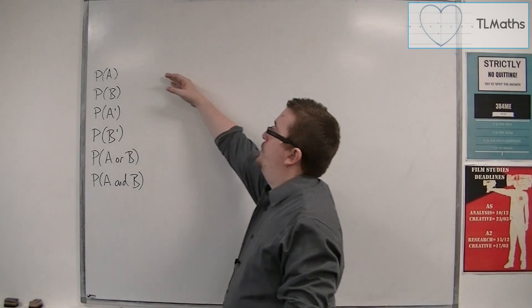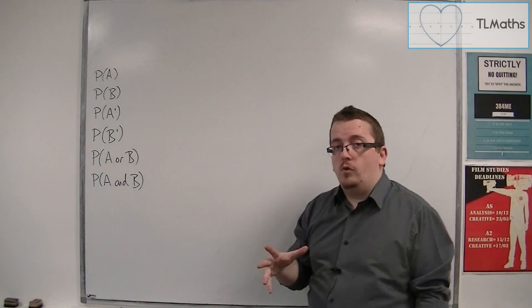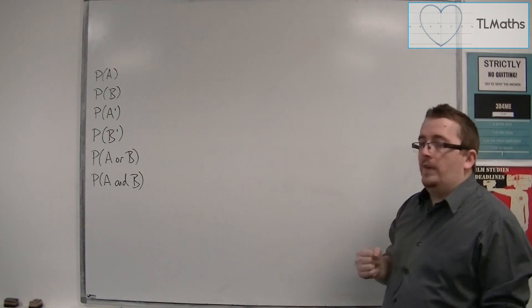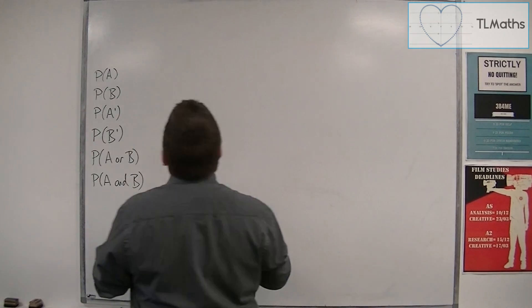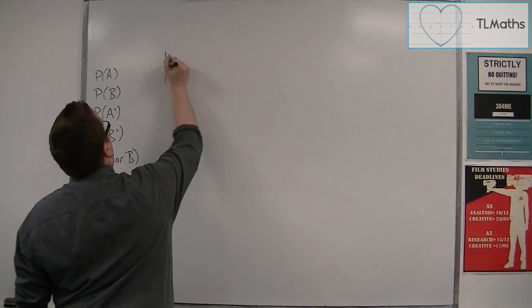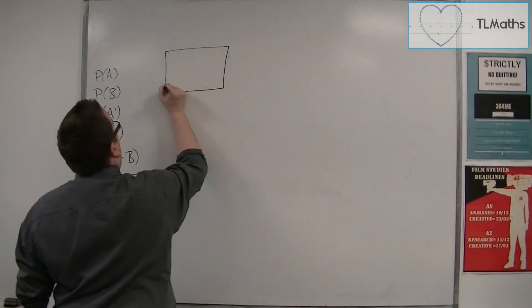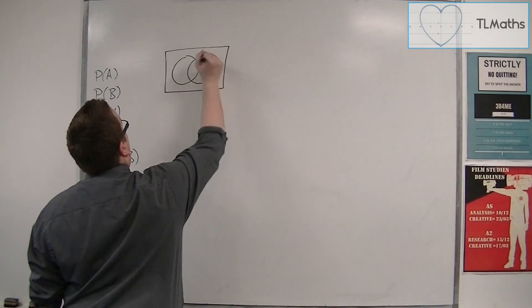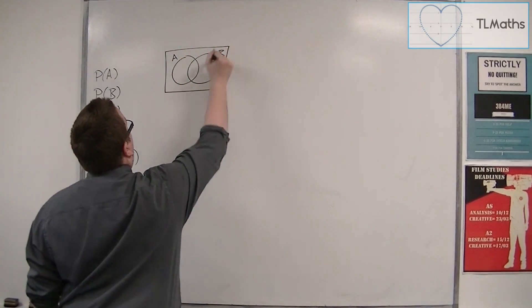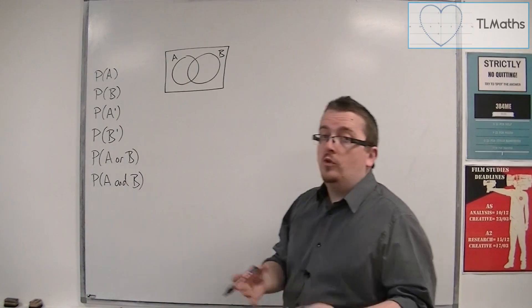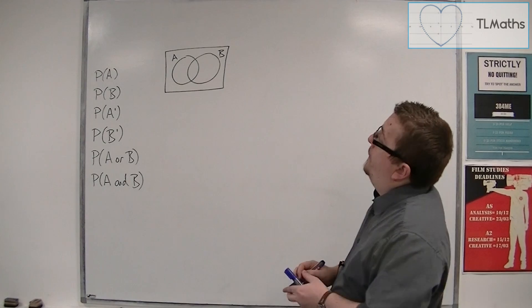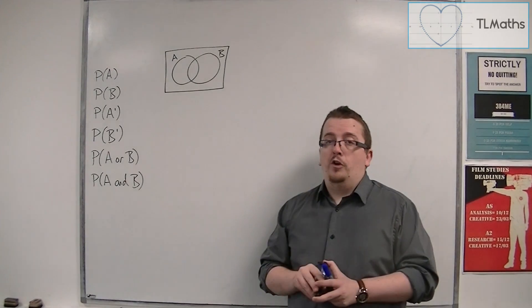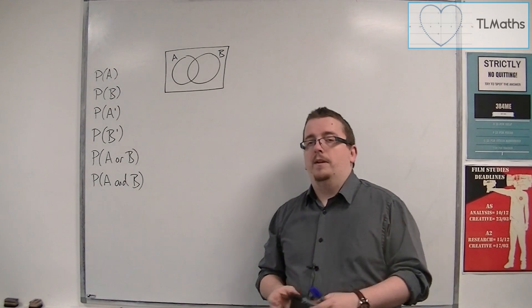So I'm going to work through these six and draw these six as Venn diagrams. We're going to start off by drawing a Venn diagram where we have two circles overlapping and we label them A and B. Make sure that whenever you draw a Venn diagram that the two circles overlapping, if they are indeed overlapping, are labeled.